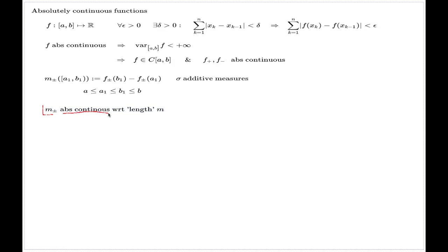The term 'absolutely continuous' here is used in the sense of the Radon-Nikodym theorem and the decomposition of measures. The hardest argument in these comments — which is left for you to discover — is to see that the measure associated with an absolutely continuous distribution function is absolutely continuous in the sense of the Radon-Nikodym theorem and the decomposition of measure.